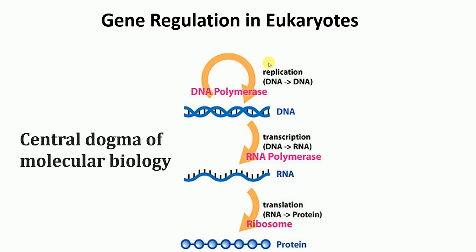Before I begin, let me first talk briefly about the Central Dogma of Molecular Biology. In the Central Dogma of Molecular Biology, DNA makes a copy of DNA with the help of an enzyme called DNA polymerase. This process is called replication — DNA makes DNA.